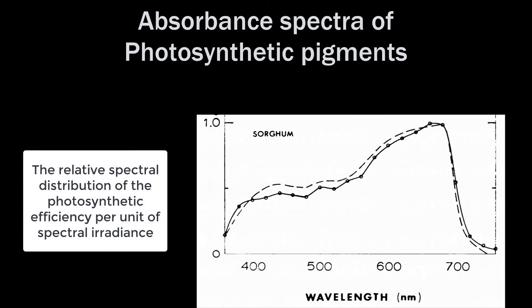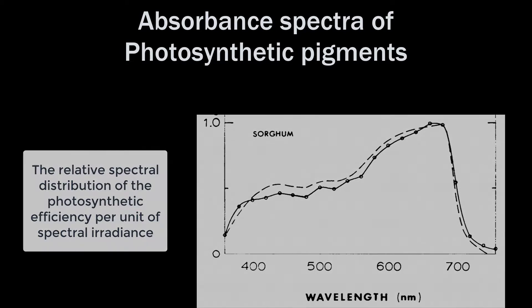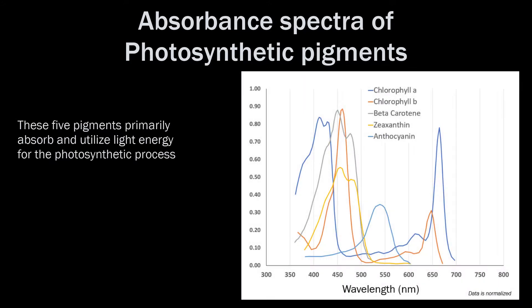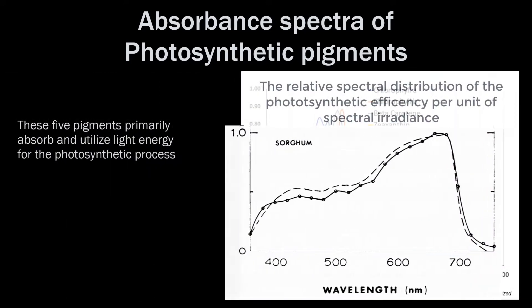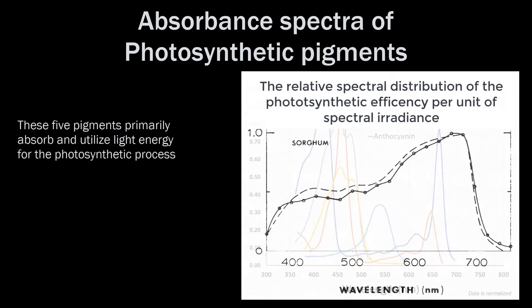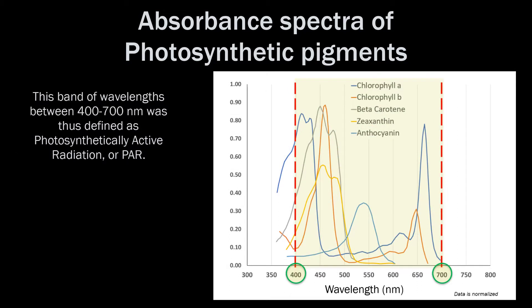Back in the late 1960s and early 1970s, Dr. Keith McCree and his colleagues at Texas A&M University put together a special apparatus that could measure the photosynthetic efficiency of leaves when exposed to specific wavelengths of light. They did this over 25-nanometer increments of light across 22 different species of leaves. As expected, the photosynthetic activity occurred over the wavelengths where those pigments best absorb light — primarily between 400 and 700 nanometers. That's where the terminology photosynthetic active radiation, or PAR, came from.